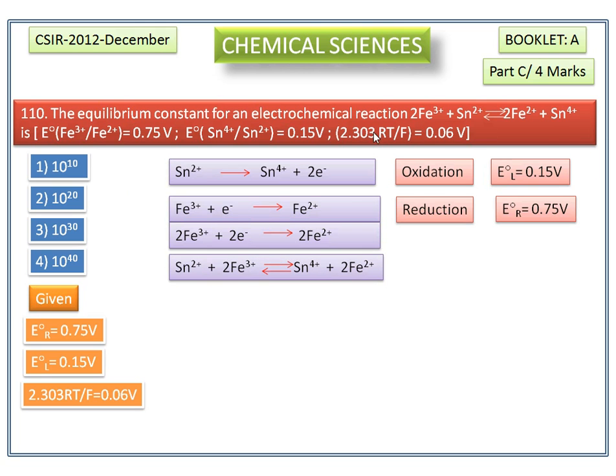Standard reduction potential is an intensive property, meaning that changing the stoichiometric coefficient in a half-reaction does not affect the value of standard potential. If the stoichiometric coefficient is multiplied by two, the standard potential does not change.